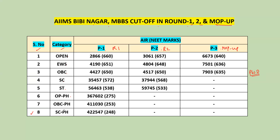OBC-PH, SC-PH. If you want to find out how many seats are allocated here, you will find out how many seats are located in each category from the seat matrix.